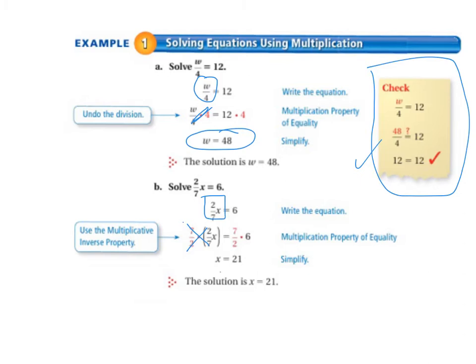So that cancels each other out, and we end up with X on the left. And since we multiplied the left side by 7 halves, we have to multiply the right side by 7 halves. And 7 halves times 6 equals 42 over 2, which simplifies down to 21. So the solution is X equals 21.